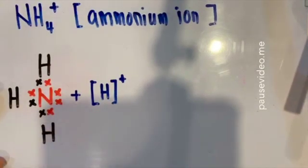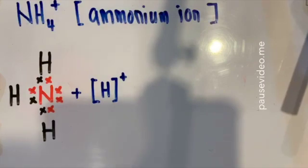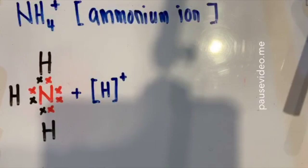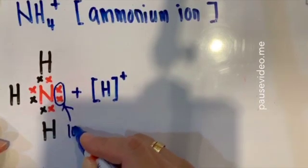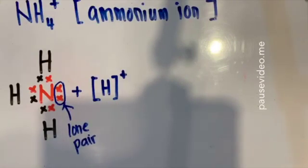This hydrogen ion will approach the ammonia molecule, asking whether it can form a duplet electron arrangement with it. The ammonia molecule responds that there is no problem, because the nitrogen atom inside the ammonia molecule has an extra lone pair. This is the location of the lone pair belonging to the nitrogen atom in the ammonia molecule.